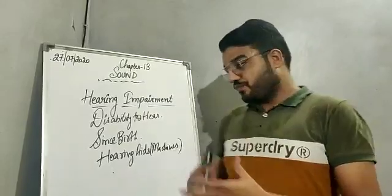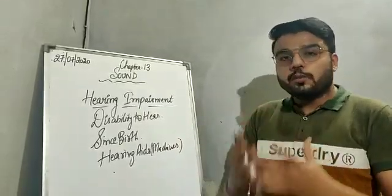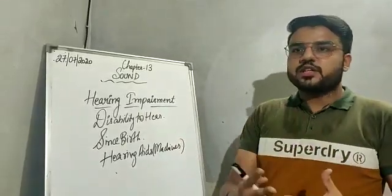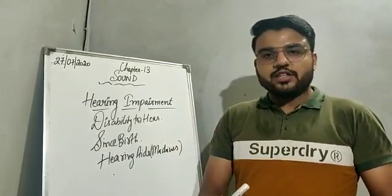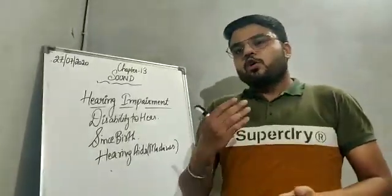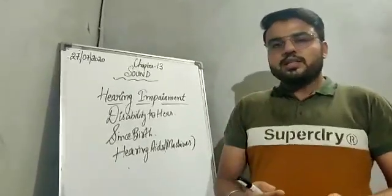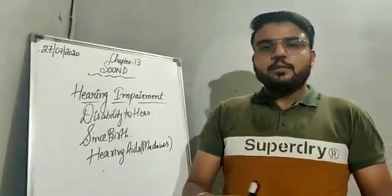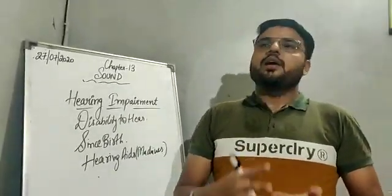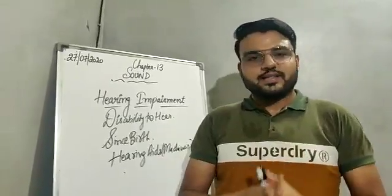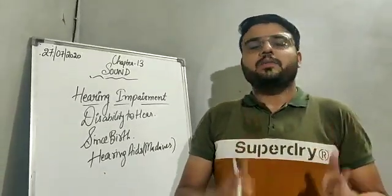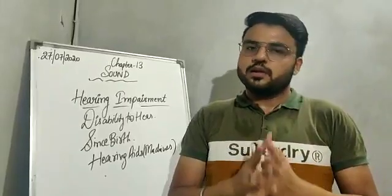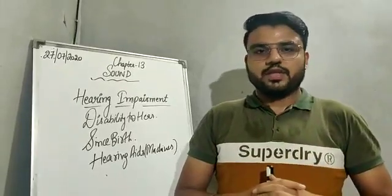The society should involve hearing-impaired people in normal activities and help them to live a normal life and communicate with each other. There is proper sign language and normal people can help them to learn things efficiently and more easily. So society should accept these people wholeheartedly and help them to live a normal life. Thank you.